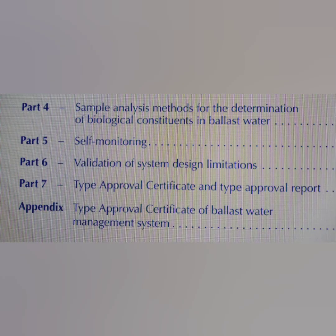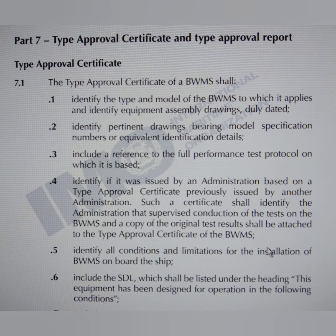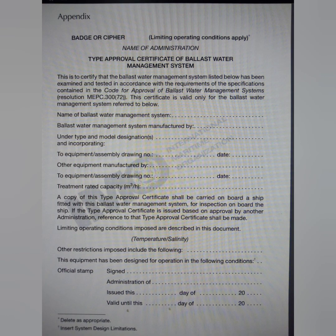The final part is part 7, which talks about the type approval certificate and type approval report. In this part, everything that is required to be in the type approval certificate and type approval report is mentioned. Last but not least, the appendix gives you the form of the certificate — how the certificate looks — and this is the copy mentioned in this code.